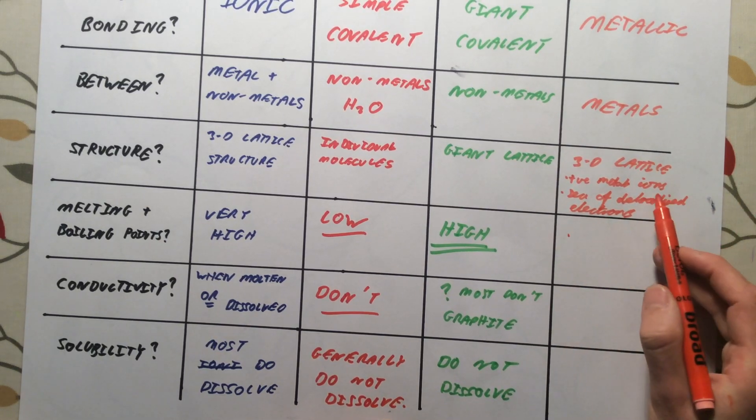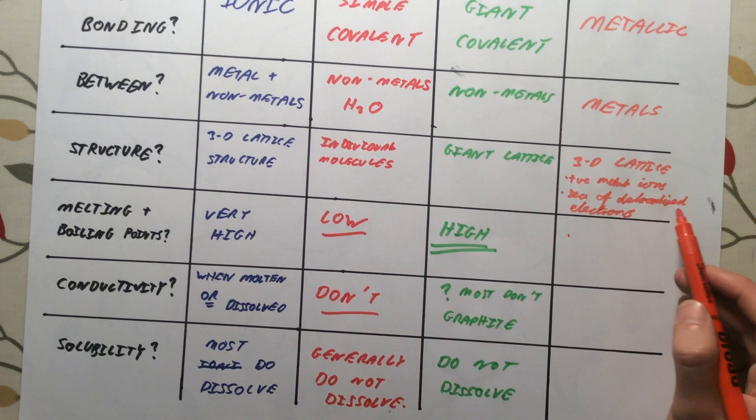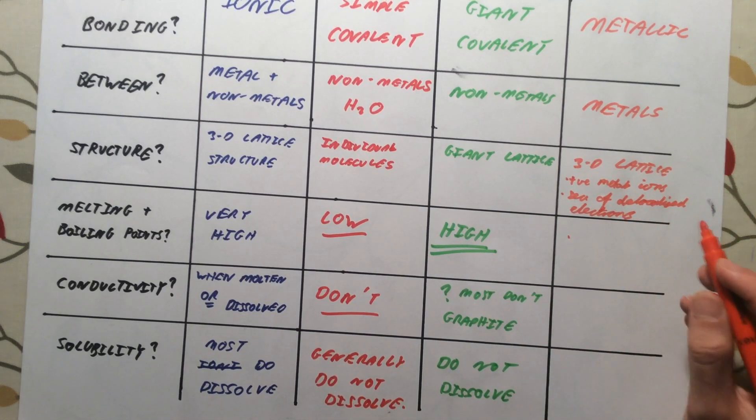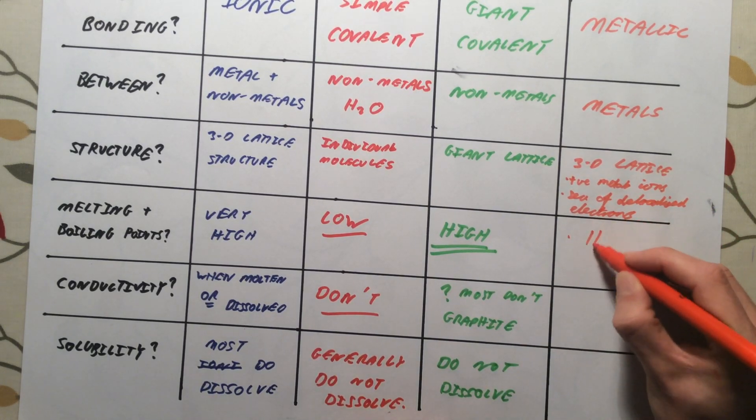Melting and boiling points. Since there are lots of these electrostatic forces, again, we've got lots of positive metal ions, we've got lots of delocalized electrons. Metals generally have high melting and boiling points.